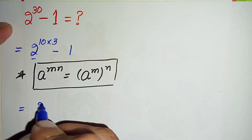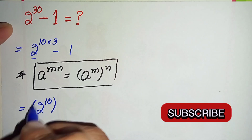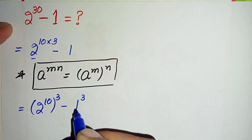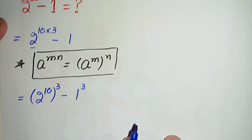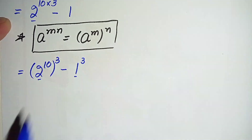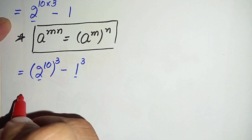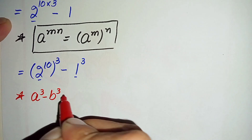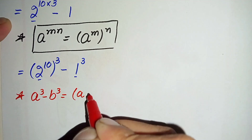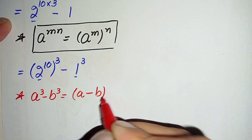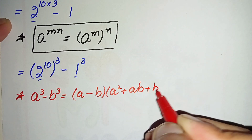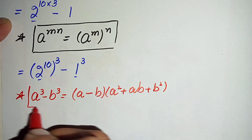Using this exponential property, this will become 2 raised to power 10, whole cubed, minus 1 cubed — because 1 cubed is the same as 1. Now here we will use the cubic identity: a cubed minus b cubed, which can also be written as (a minus b) times (a squared plus ab plus b squared).